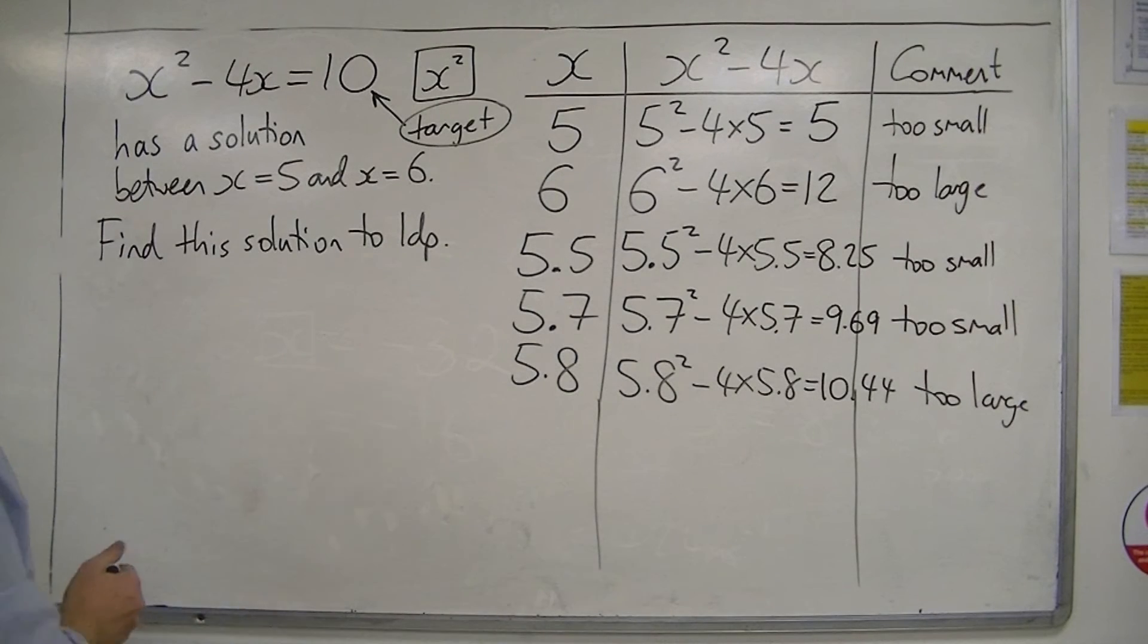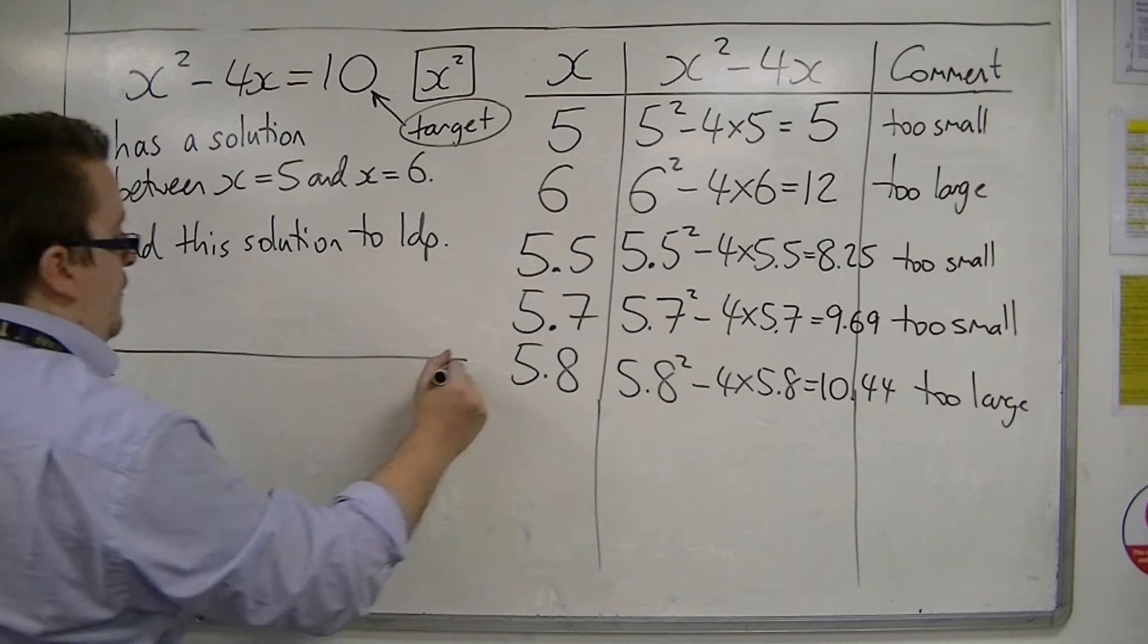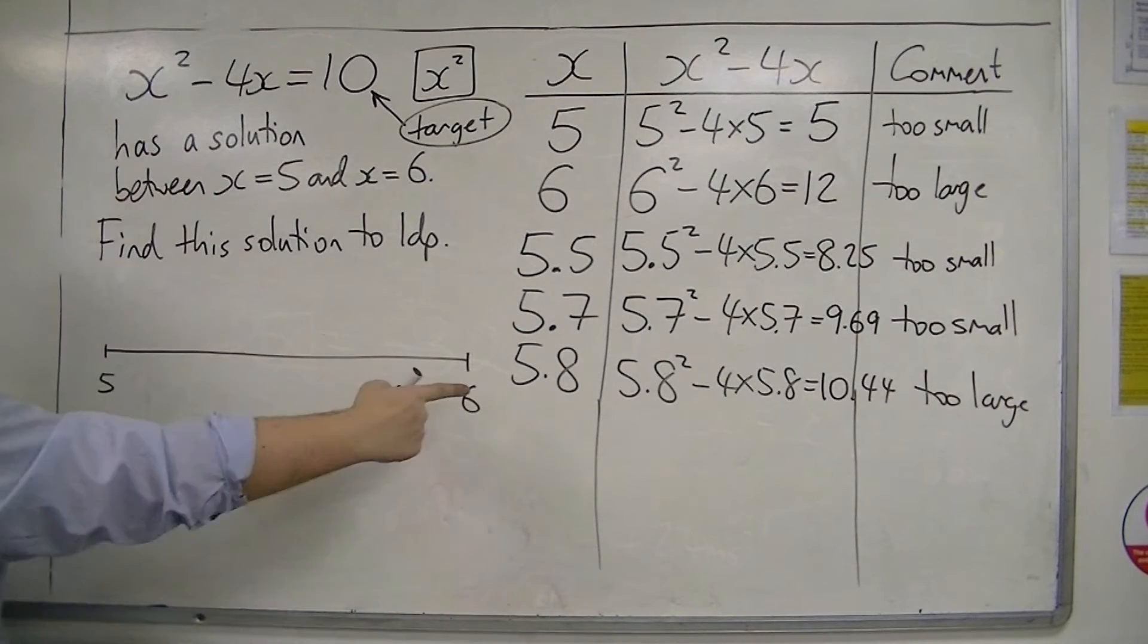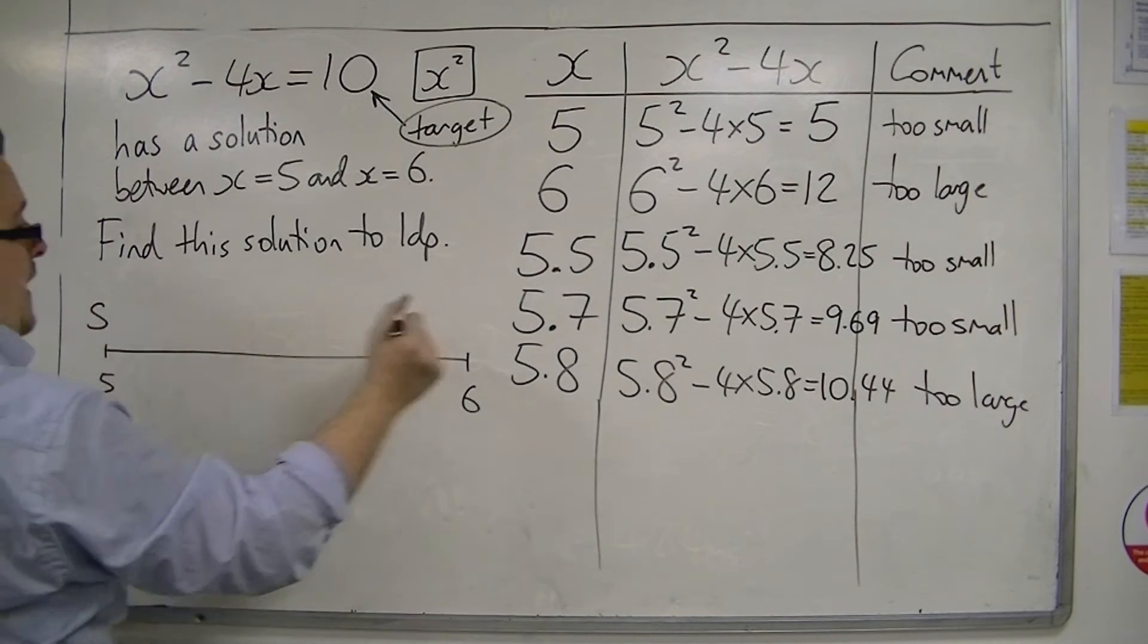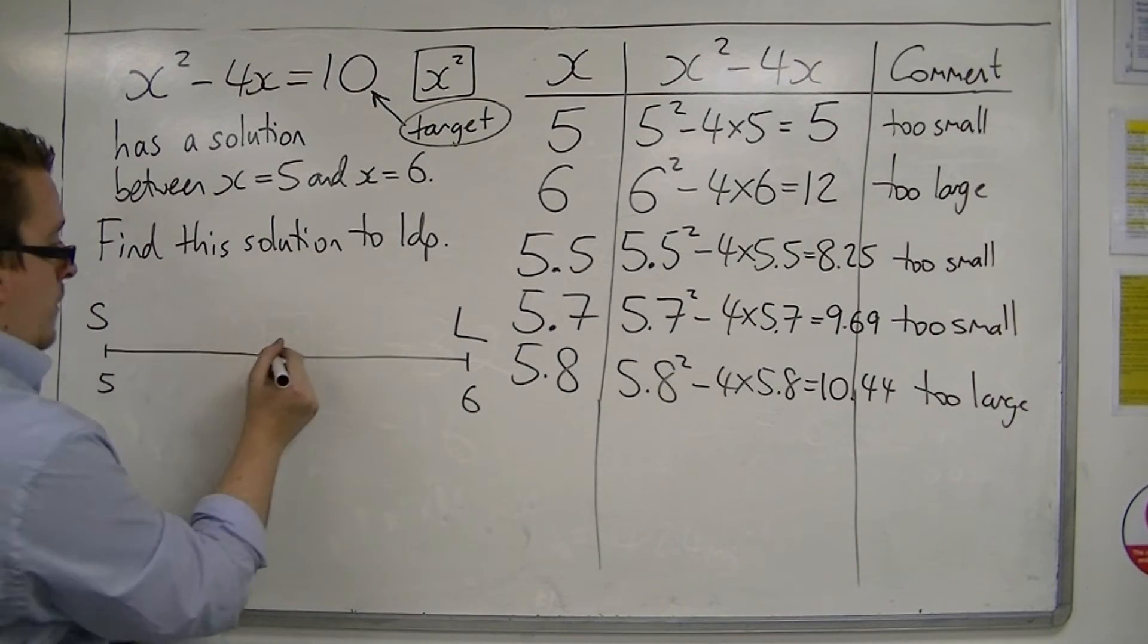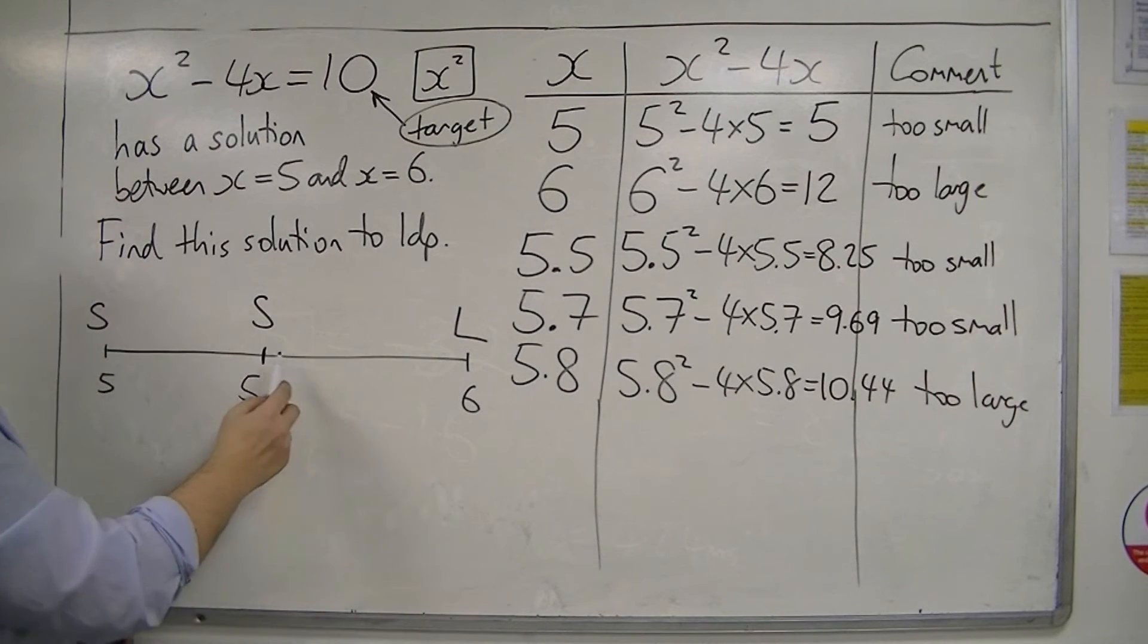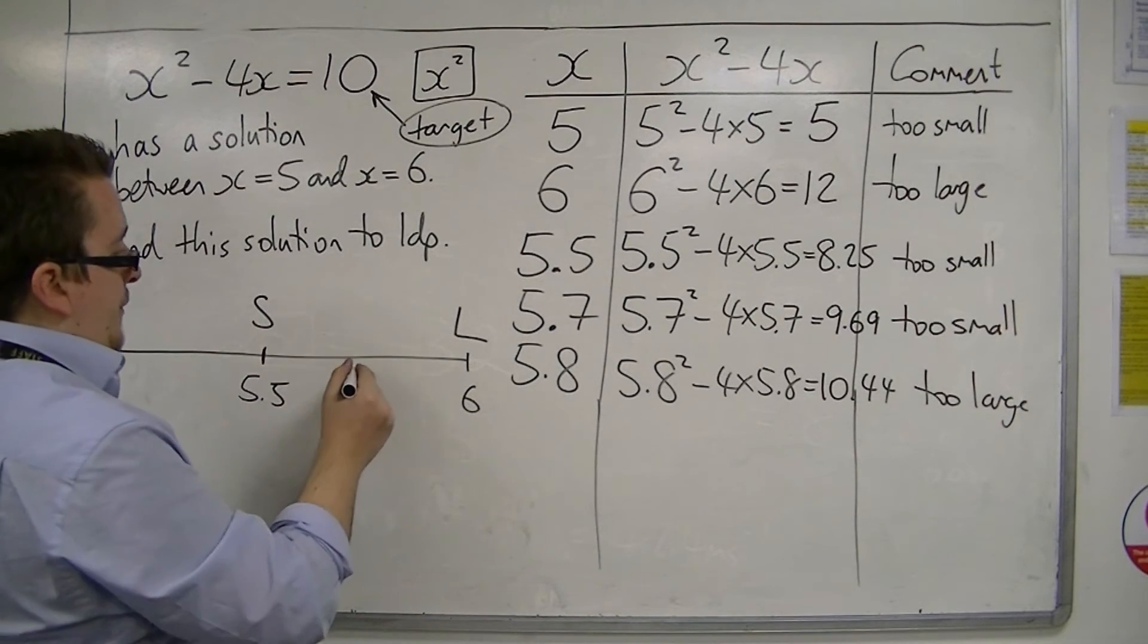So what's happened is that on my number line between 5 and 6, I know the solution is here somewhere. So that was too small, that was too large. Now, I then tried 5.5, that was too small. So I now know that my answer is between these two values.